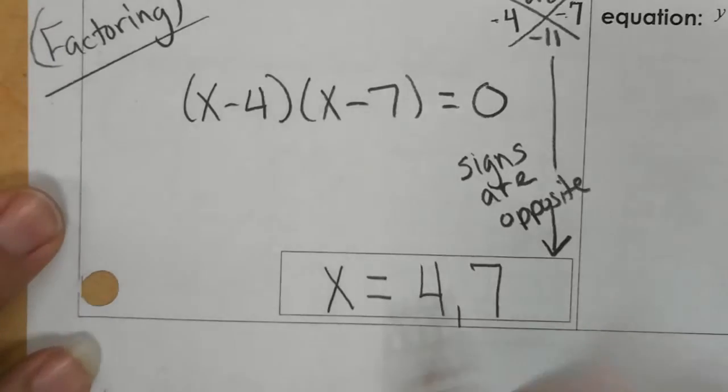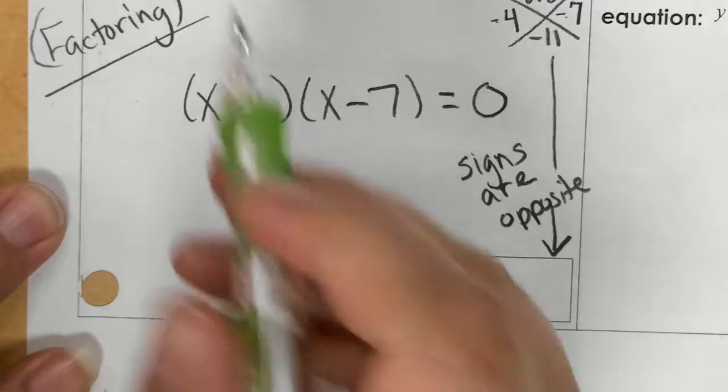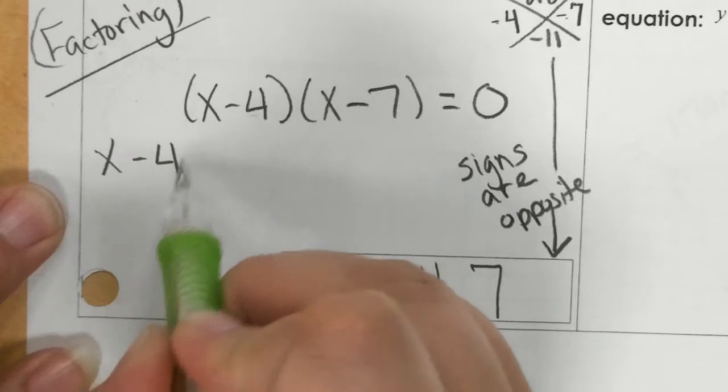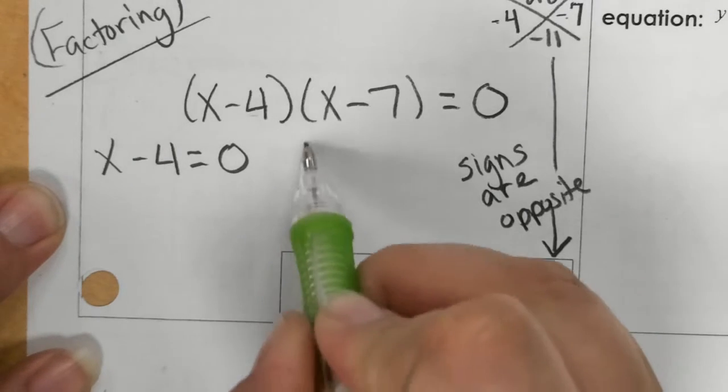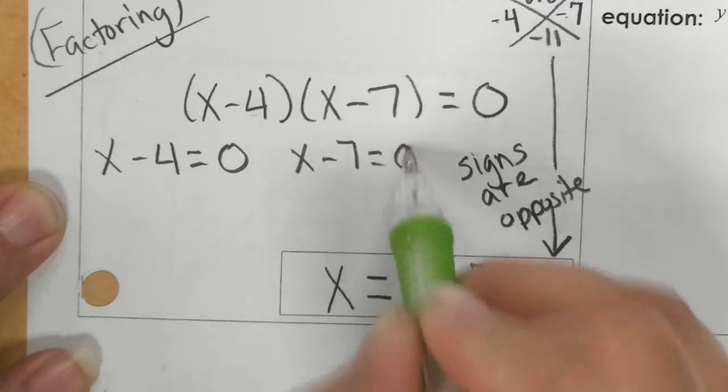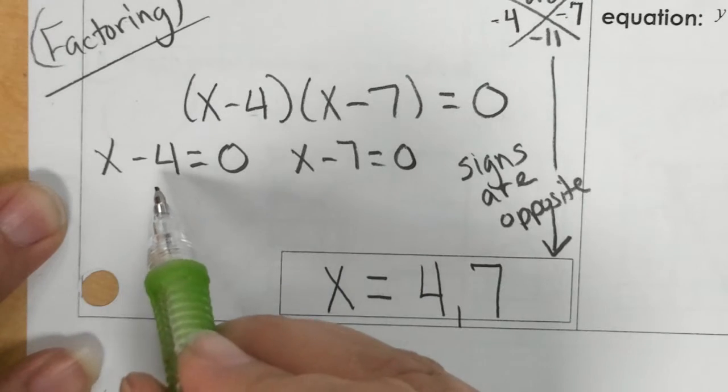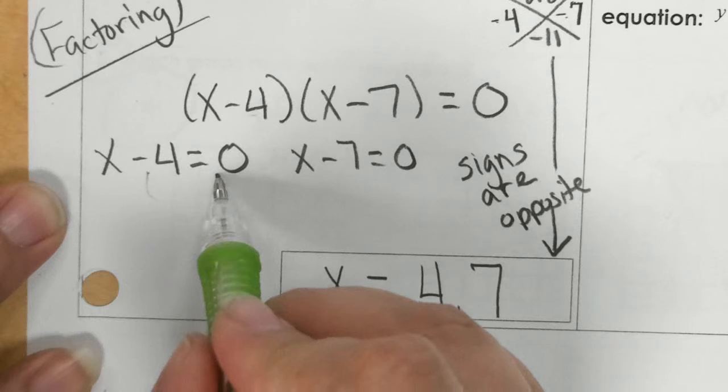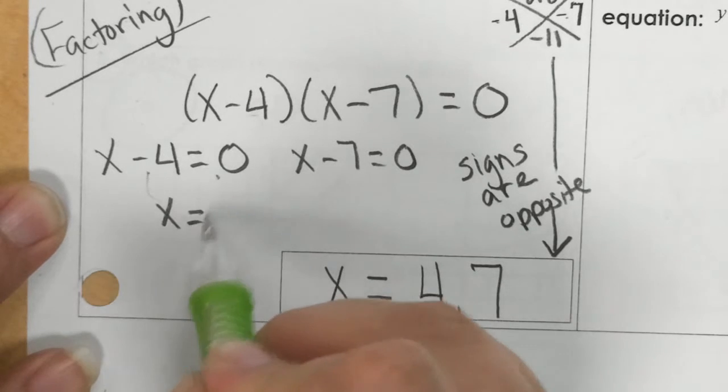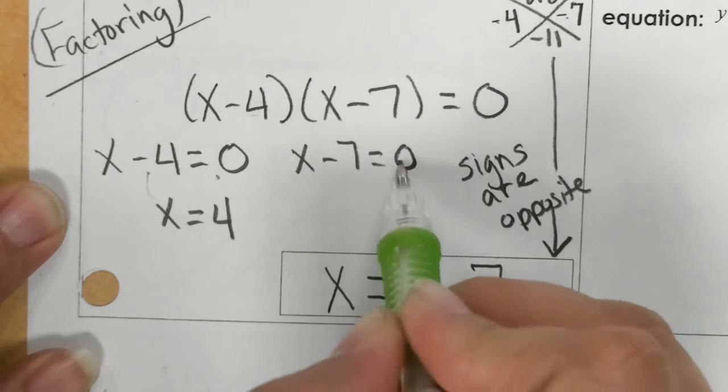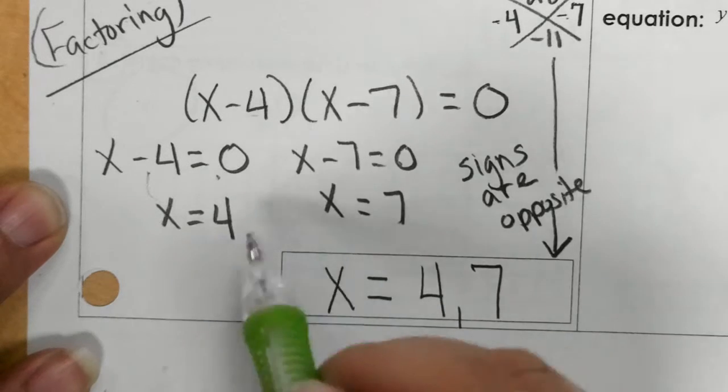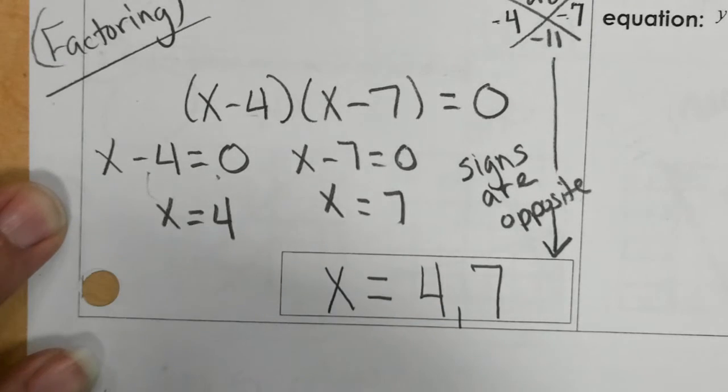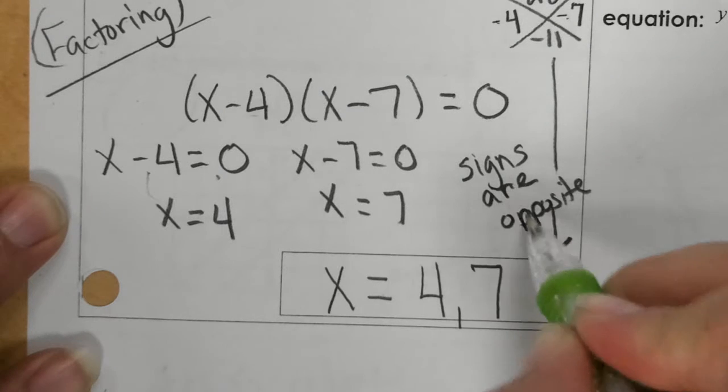You also need to make sure you understand that you are setting this equal to 0. If I were to actually solve it like a one step, I would add 4 to the other side, that would give me 4. And I would add 7 to the other side, and that would give me 7. So I could see I would have positive 4, positive 7. That same idea, signs are opposite.